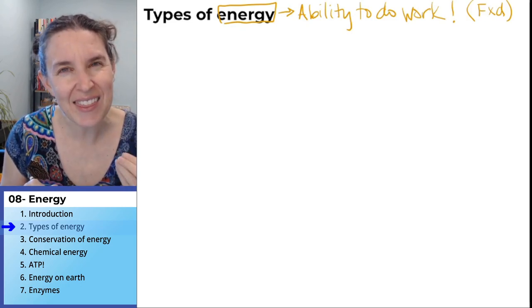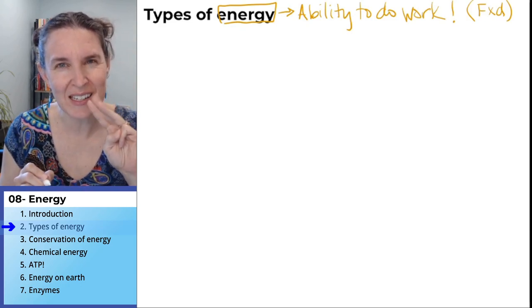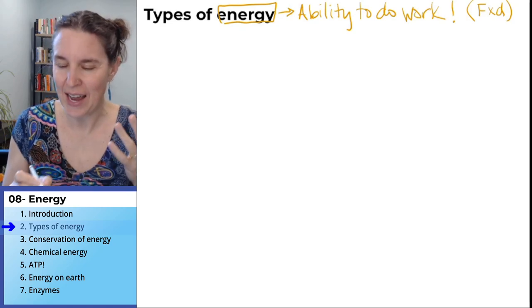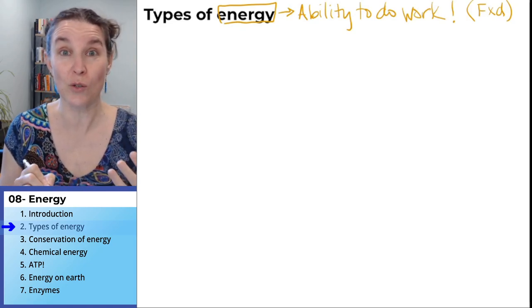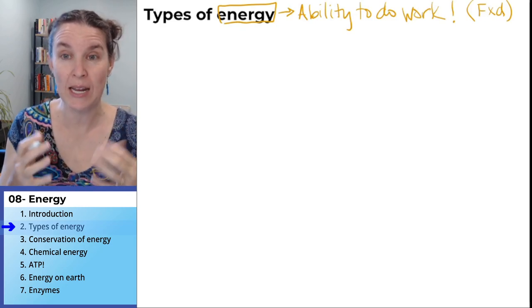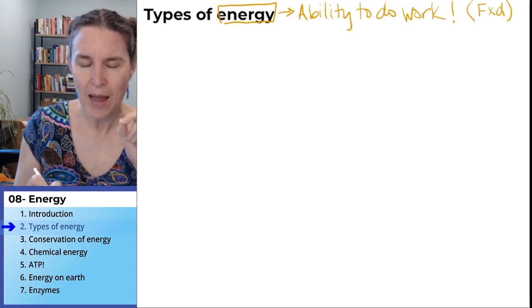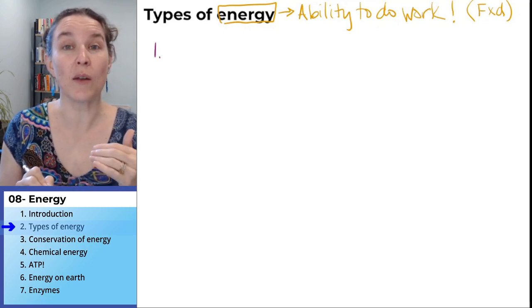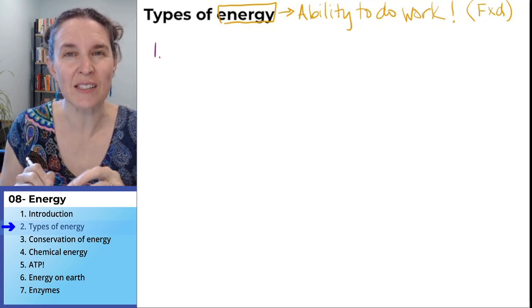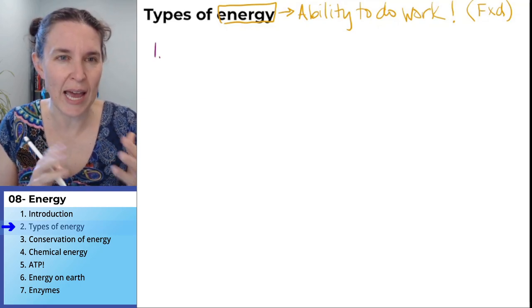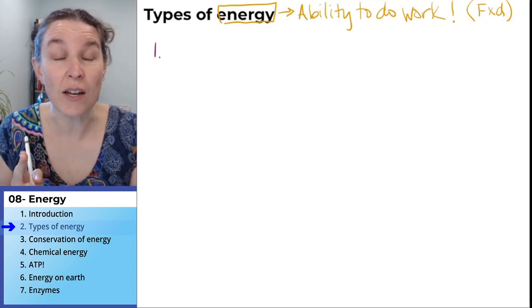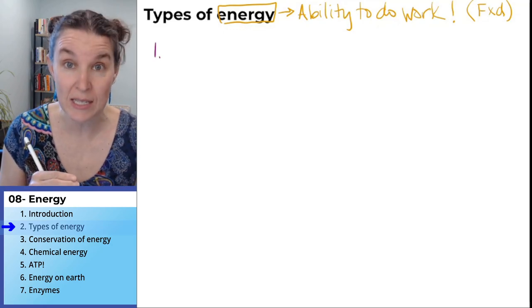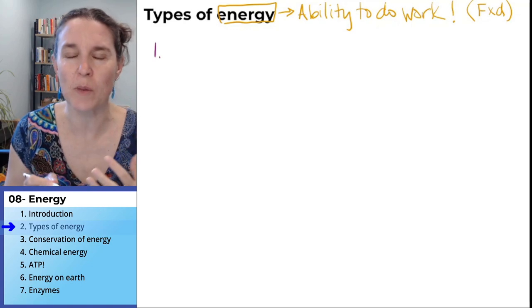There are three main categories of energy that we're going to look at in this class. I'm going to name seven types of energy or seven categories of energy, and this list is not comprehensive. I've picked the kinds of energy that will help us with biological concepts.